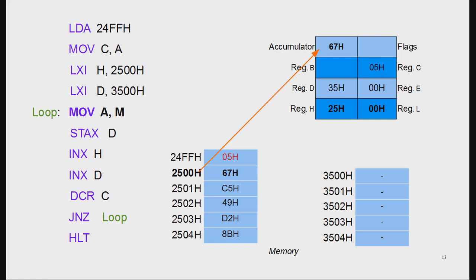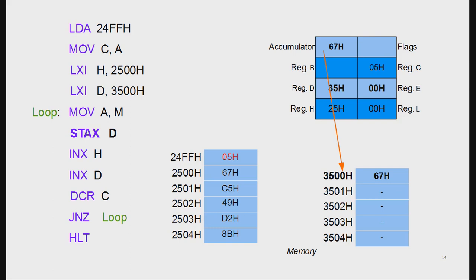The HL pair holds 2500H. When we execute MOV A,M, the value 67H at that address is copied into the accumulator. Then STAX D sends the accumulator content to address 3500H — STAX D takes the address from the DE pair, which holds 3500H, and copies the accumulator content there.